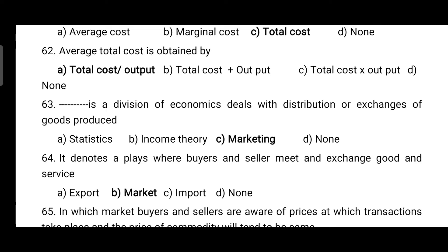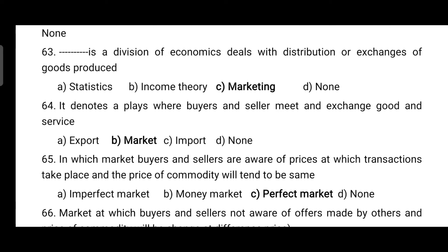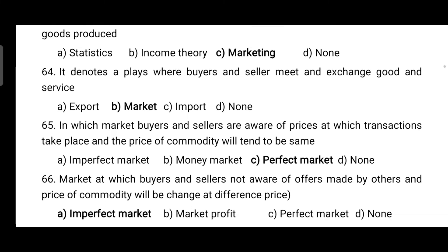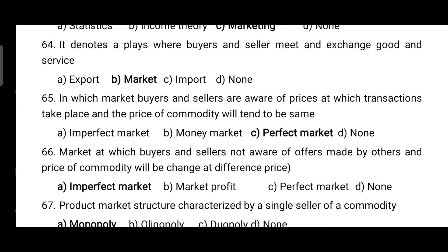Average total cost is obtained by total cost divided by output. Marketing is the division of economics that deals with distribution or exchange of goods produced. A market denotes a place where buyers and sellers meet and exchange goods and services.